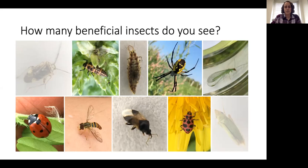This bug here and this bug here are both lacewings, but they look very different — as adults they have green lacy wings, or sometimes brown, versus as larvae they look more like the ladybug larvae. The larvae have really large mandibles — jaws — which may make them look like they're not beneficial, but they use these to eat lots of pests in your garden. Spiders are also great generalist predators and will eat a lot of insects for you.